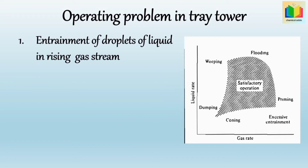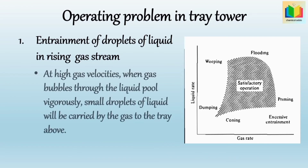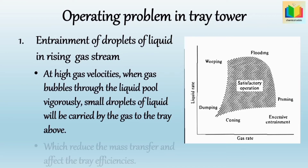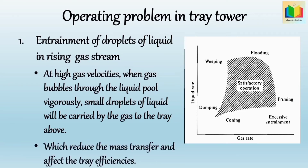Entrainment occurs at high gas velocity. When gas bubbles through the liquid pool vigorously, small droplets of liquid will be carried by the gas to the tray above. This condition is called entrainment. Liquid carried up by the gas due to entrainment reduces the concentration change, which causes a decrease in mass transfer and also affects tray efficiency.